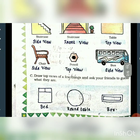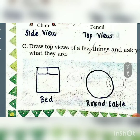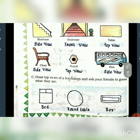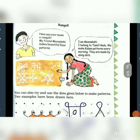Draw the top view of a few things and ask your friends to guess what they are. Here they are asking us to draw the top view of a few things. I have given some examples — you can draw whatever picture you want. This is a bed with two pillows, this is a round table, and this is a box.